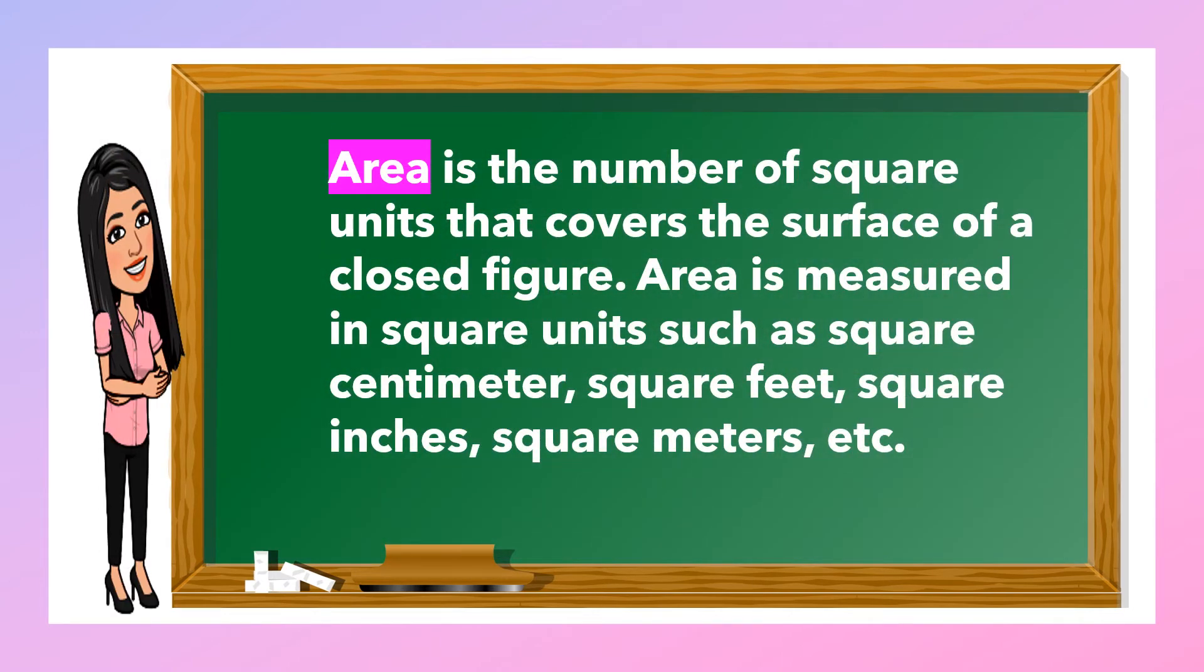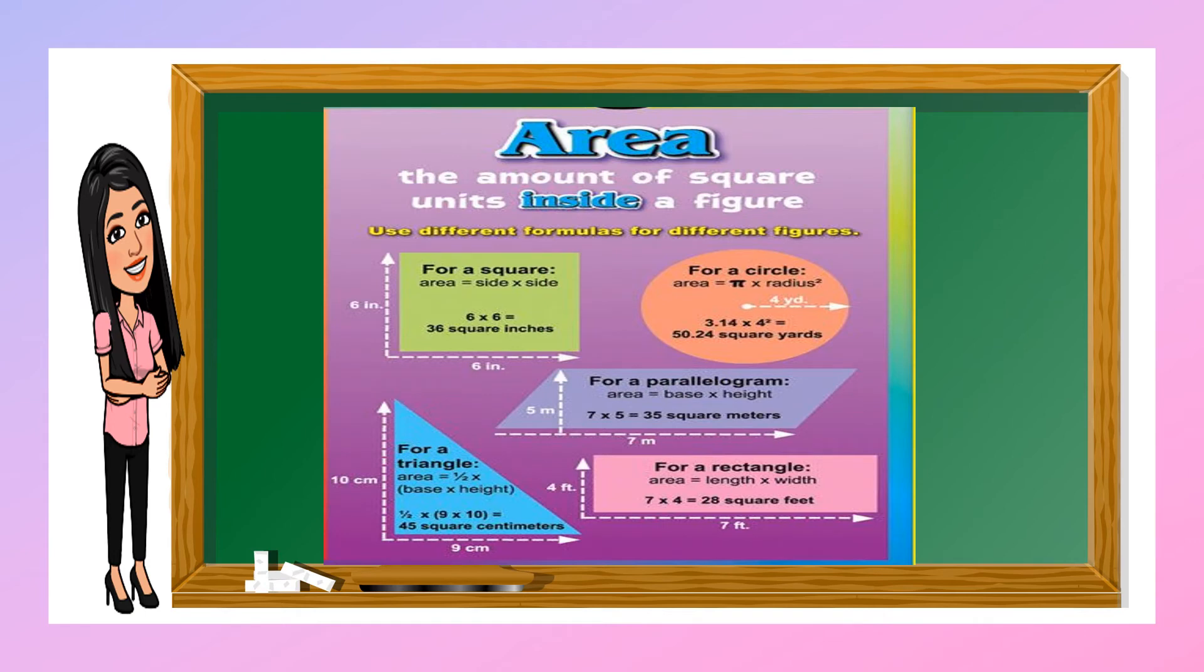Okay, so when we say area, it is the number of square units that cover the surface area of a closed figure. Area is measured in square units such as square centimeters, square feet, square inches, square meters, and etc. So again, the area is the amount of square units inside the figure. And we have different formulas for different figures.